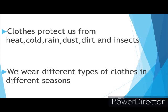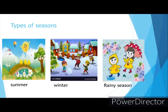We wear different types of clothes in different seasons. What are the different types of seasons? Summer, winter and rainy season. In summer the weather is very hot, in winter it is very cold, and during rainy season we get heavy rain. So according to these seasons, we wear different types of dresses.